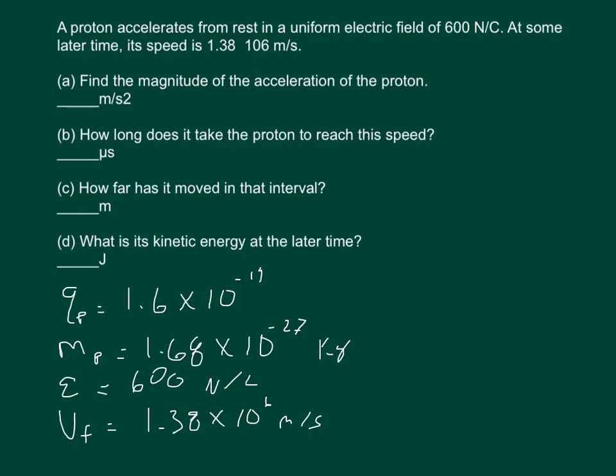So in part A it says find the acceleration. Like we did in the last question, force equals mass times acceleration, but we also know that the force is equal to the charge times the electric field. And so we just set QE over M is equal to acceleration. That's going to be our equation for part A.